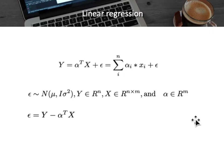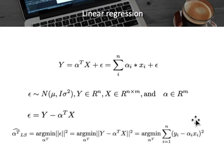We start with the definition of linear regression where the response variable y is defined as a linear combination of input features x multiplied with a weight vector alpha, and then we add a residual term epsilon that follows a normal distribution with a mean and variance. We can define epsilon as y minus alpha transpose x, which leads us to build this as an optimization problem to estimate the best alpha vector.